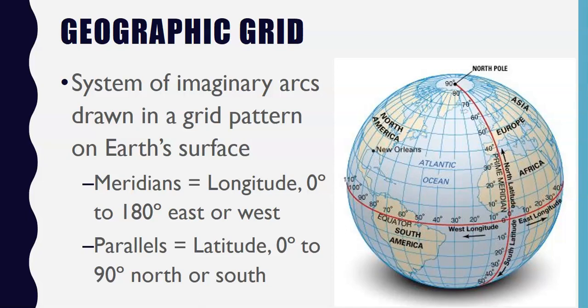For example, Denver, Colorado's state capital building is located at 39 degrees, 42 minutes, 2 seconds north latitude, and 104 degrees, 59 minutes, 4 seconds west longitude.